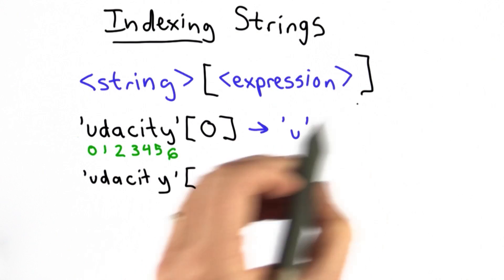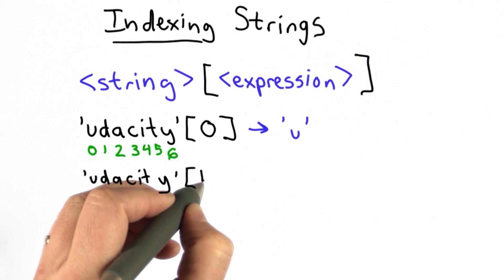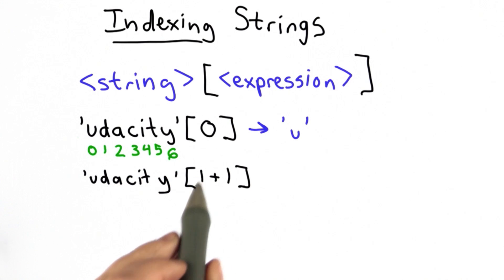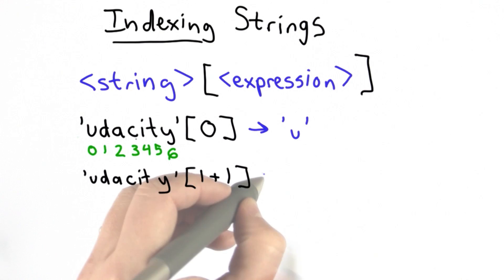The expression inside the square brackets can be anything that evaluates to a number. So we could have 1 plus 1 in here. 1 plus 1 evaluates to the number 2, and at position 2 we find the letter A. So the value of this would be the string containing the single letter A.